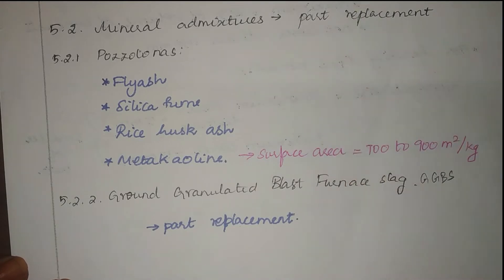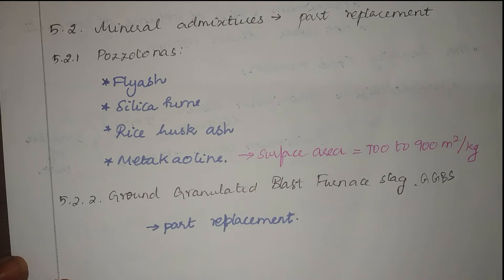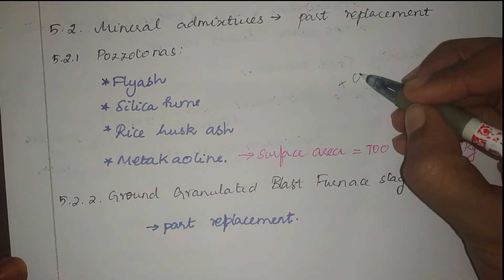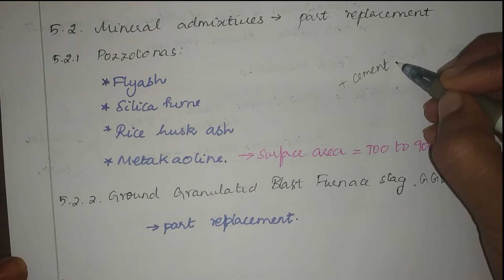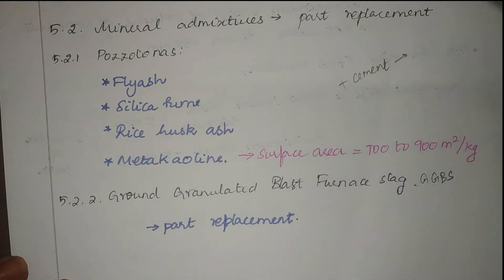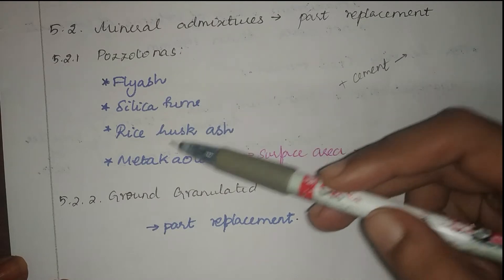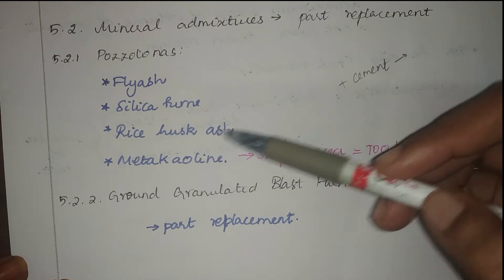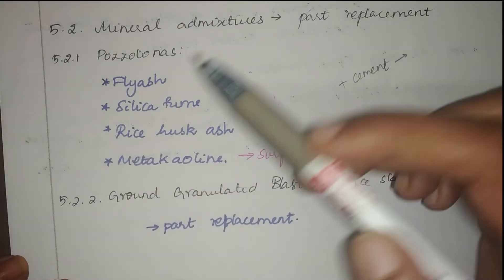Pozzolanas are materials which don't have any cementitious property by themselves, but when they are added with cement they produce cementitious properties — that is why they are called pozzolanas. They may be fly ash, silica fume, rice husk ash, or metakaolin.